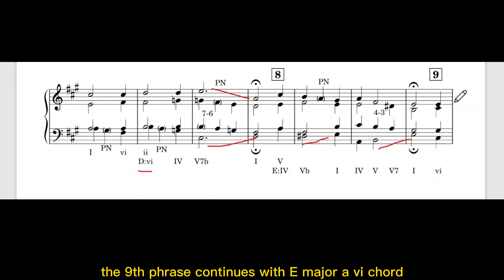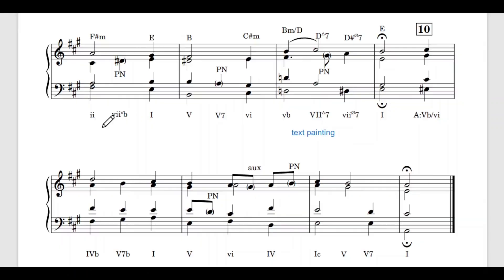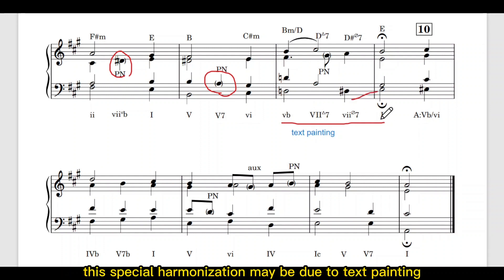The ninth phrase continues with E major, a 6 chord. We can take this D sharp and the A as a passing note or we can take this D sharp as a chord tone from 7B and the A from a chord tone of 5-7. Towards the cadence, the approached chords are uncommon. The 5B is a minor chord. 7 major 7 and then 7 half diminished 7 resolves to 1. This special harmonization may be due to text painting. I will explain this term and provide the lyrics for your reference in the description below.